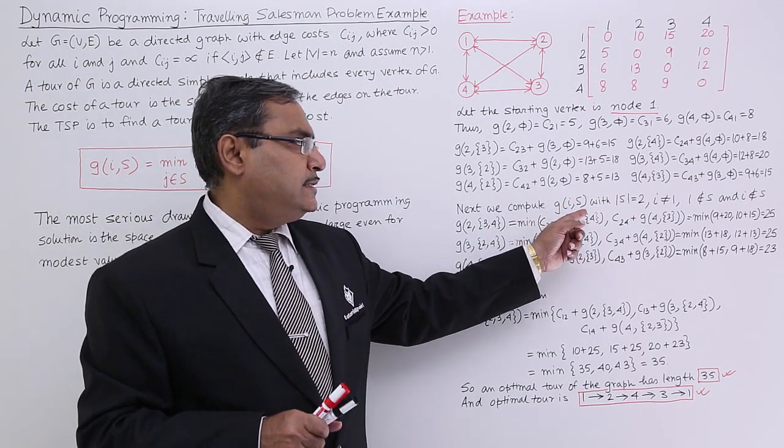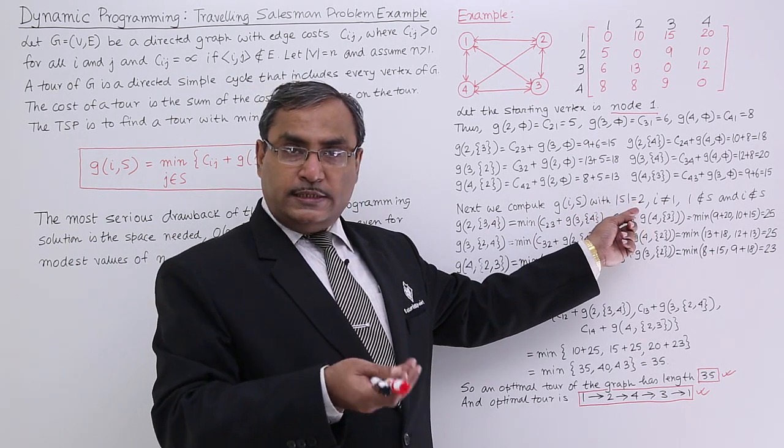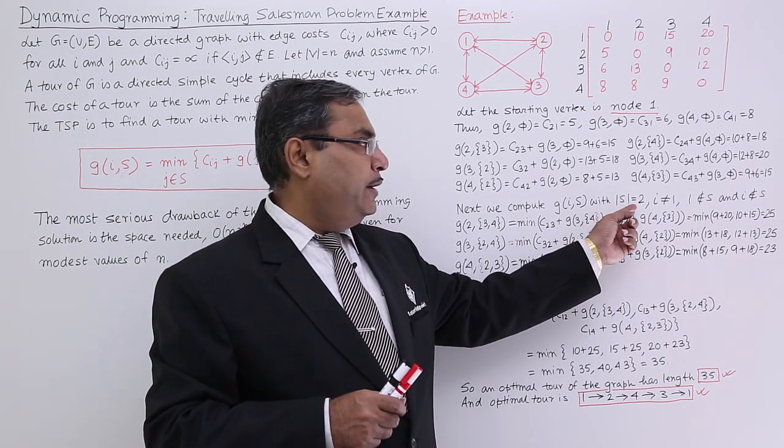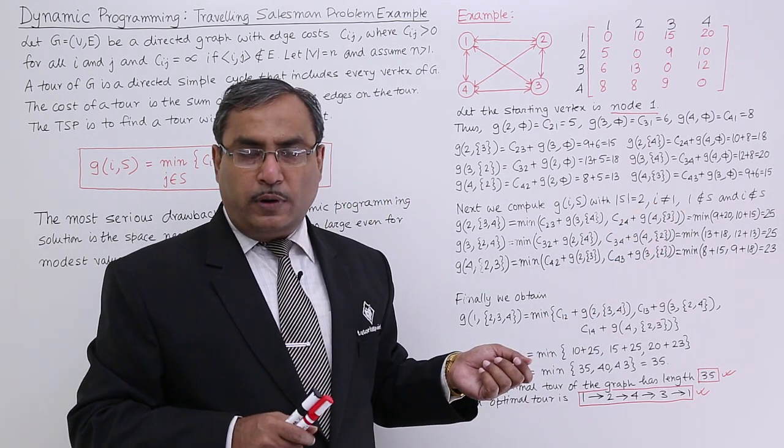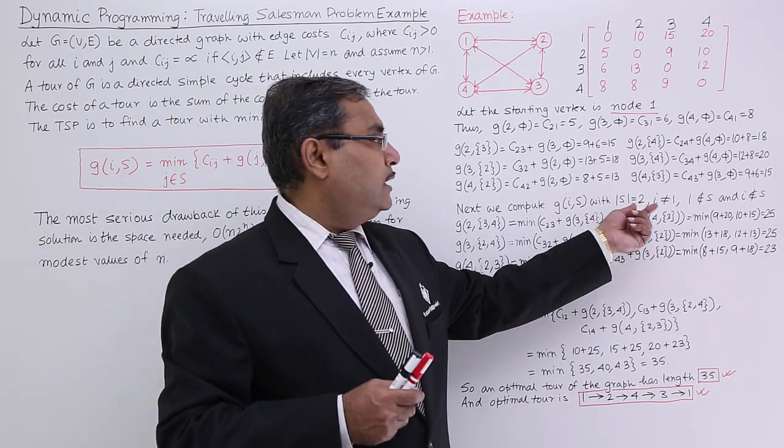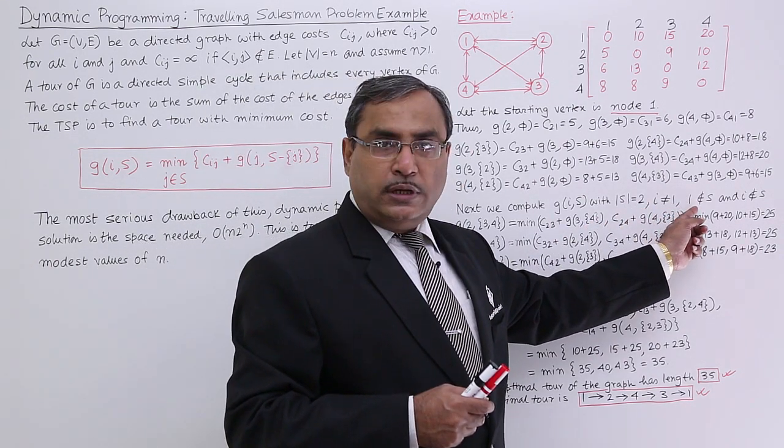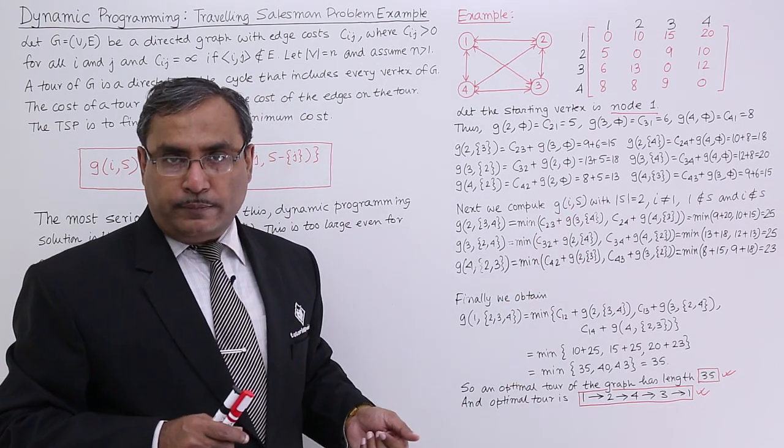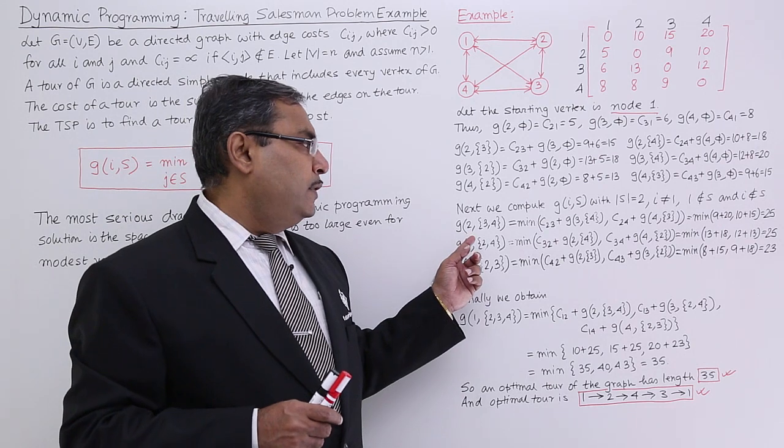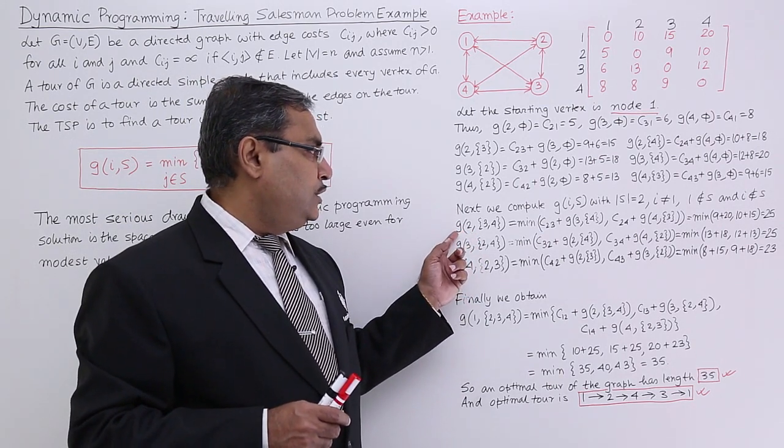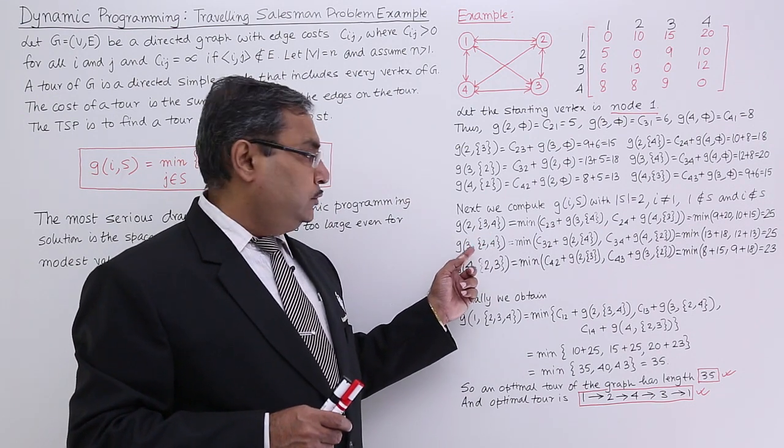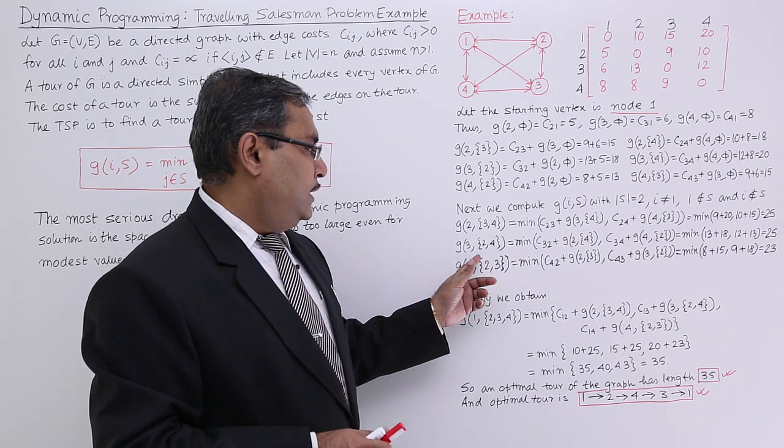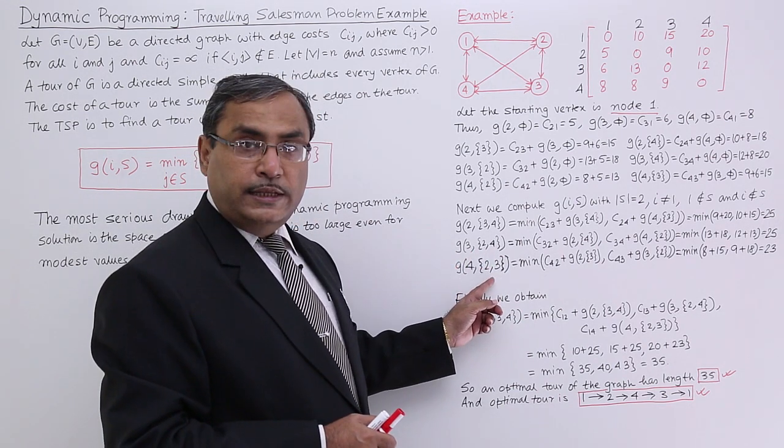Now we compute g(i,S) where number of elements in S will be 2, that is its prior recursive call. Untraversed number of nodes will remain 2 and i is not equal to 1. Obviously i is not equal to 1 because 1 is the first node from where we have started our journey. 1 also does not belong to S and i does not belong to S. That means S is containing those nodes which is not i and also not 1. So we can have these particular combinations: G(2,{3,4}), G(3,{2,4}) and G(4,{2,3}).